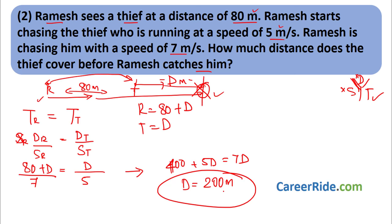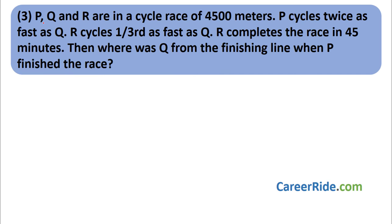Question 3: P, Q, and R are in a cycle race of 4500 meters. P cycles twice as fast as Q. R cycles one-third as fast as Q. R completes the race in 45 minutes. Where was Q from the finishing line when P finished the race? This looks tricky, but the answer comes from just the first two sentences. The rest of the information is not needed.